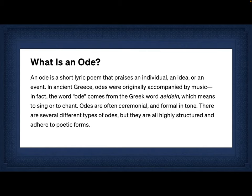The word ode comes from the Greek word 'aden', which means to sing or to chant. So odes are simply poems that are sung. Odes are often ceremonial — written for some special occasion or ceremony — and formal in tone. These are not informal poems; they are written with a certain wording and style. There are several different types of odes, but they are all highly structured and adhere to poetic forms.